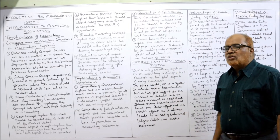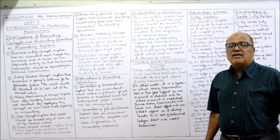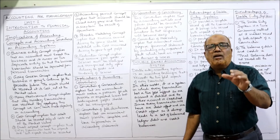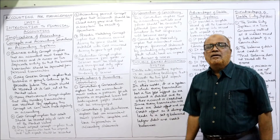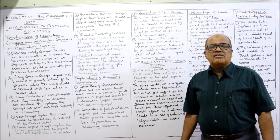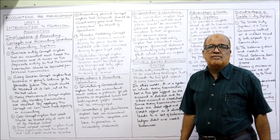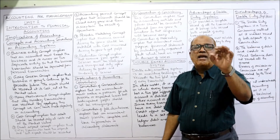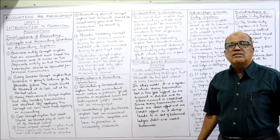Then the convention of materiality. By applying this convention, we can disclose all material or significant items separately in the financial statements so that users of financial statements can make decisions. These are the implications of accounting concepts and accounting conventions on the accounting system.